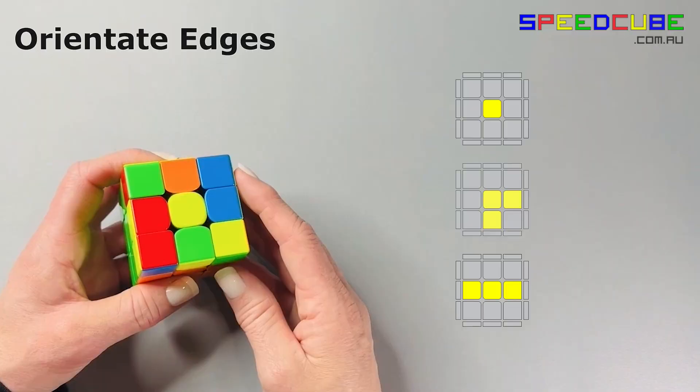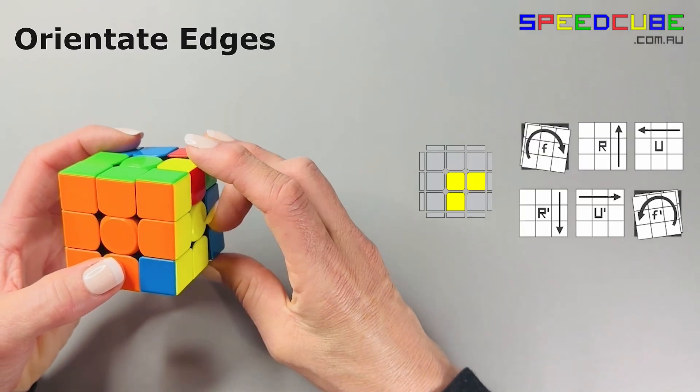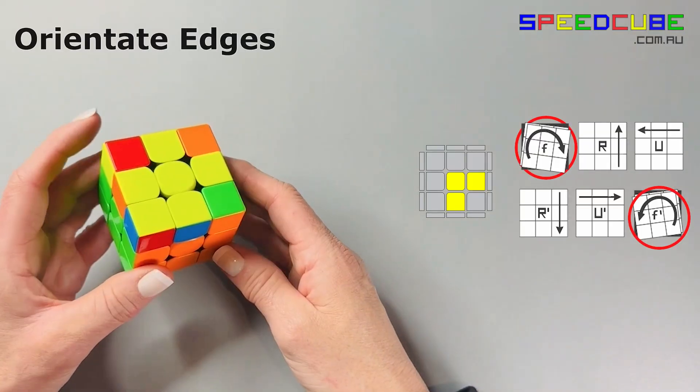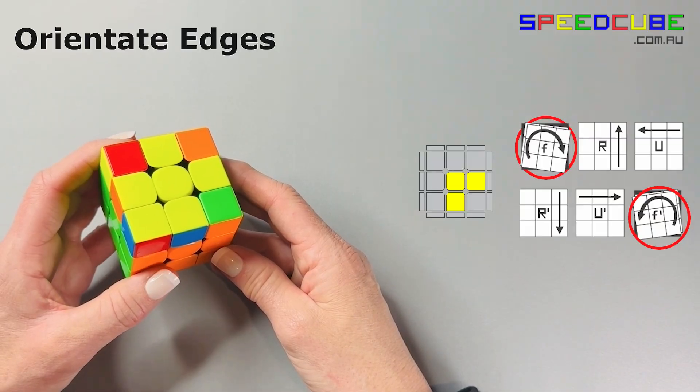If you have the hook, then you perform these steps to get it to the cross. Notice the wide first move.